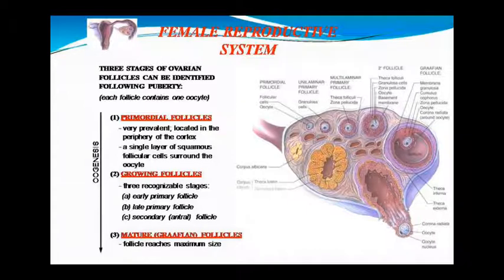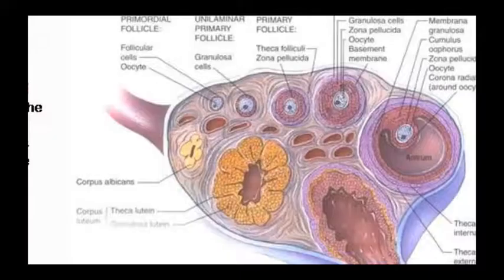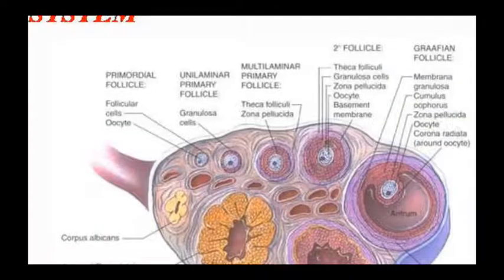Here the ovary has been shown in the upper section. These are follicle cells surrounding the oocyte as a primordial follicle. This is called the primary follicle because it is unilaminal — a single layer. Then there are granulosa cells, then the multilaminal primary follicle which is thicker, and zona pellucida layers. Then the secondary follicle develops with thicker granulosa cells and zona pellucida, seen against the basement membrane.